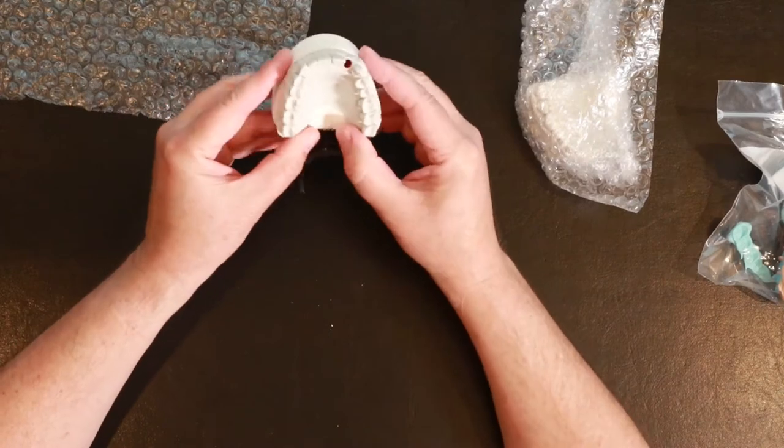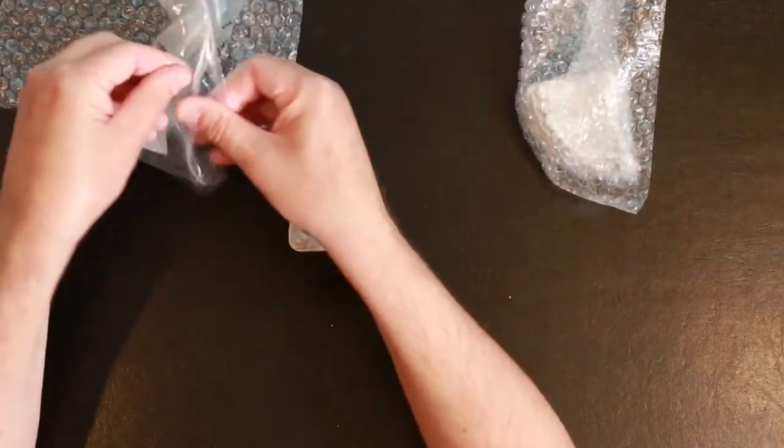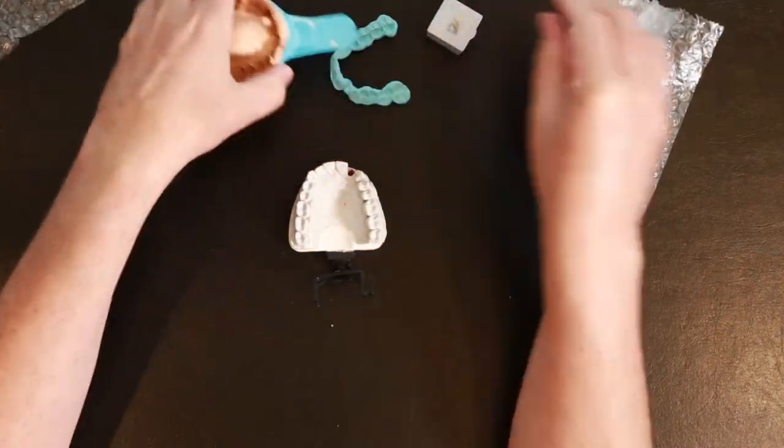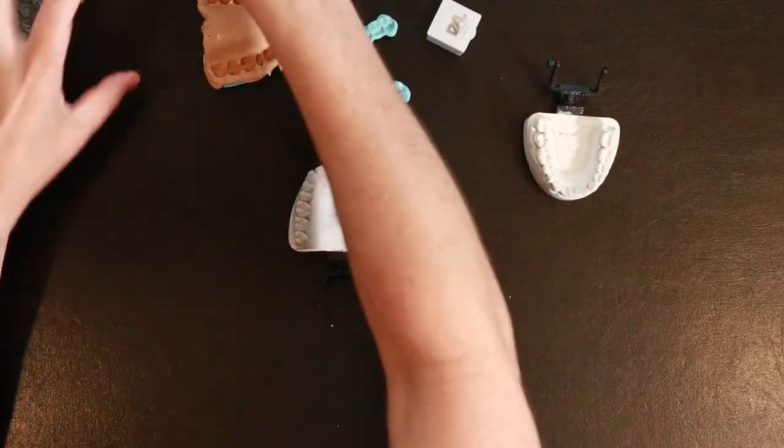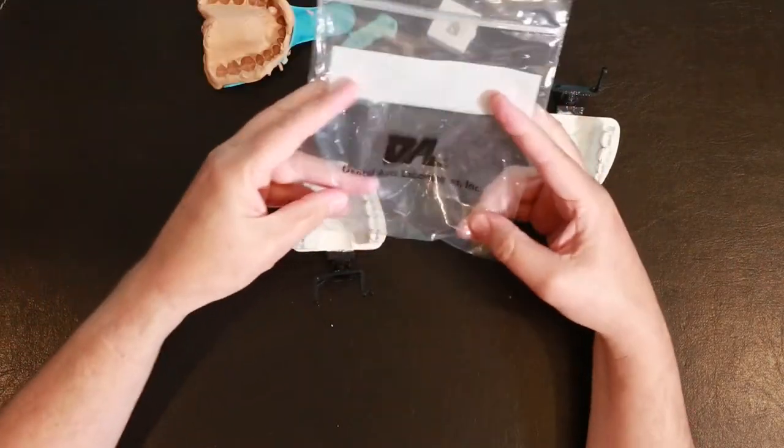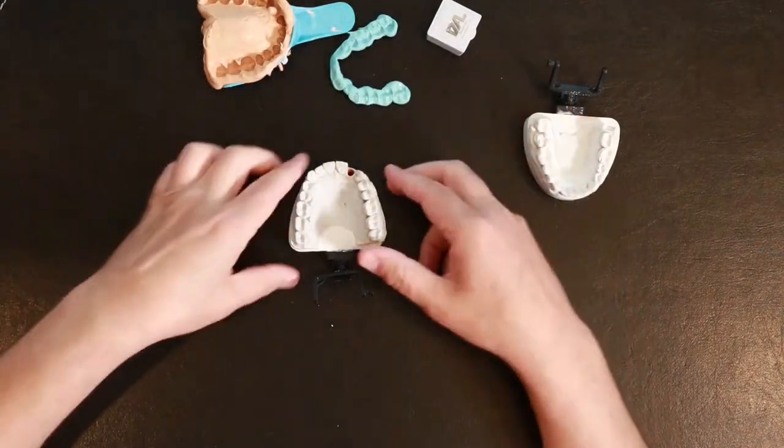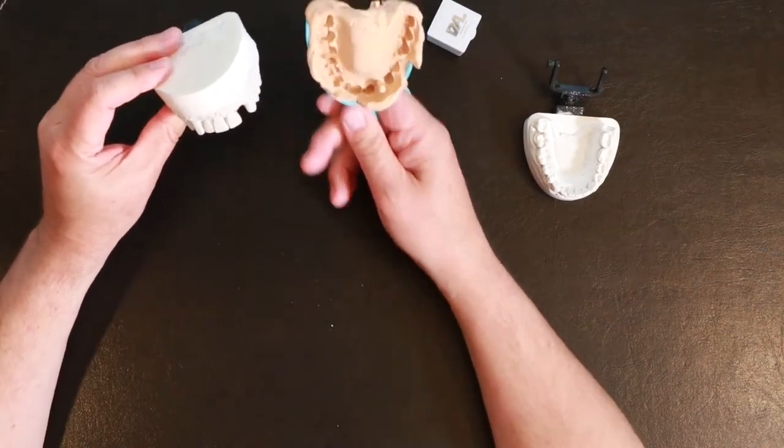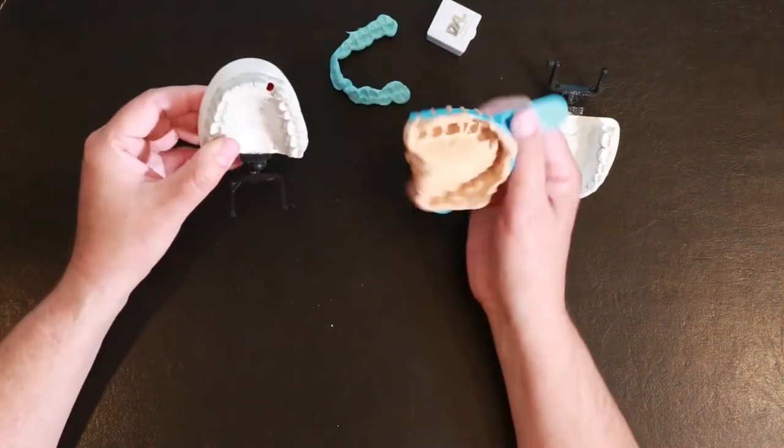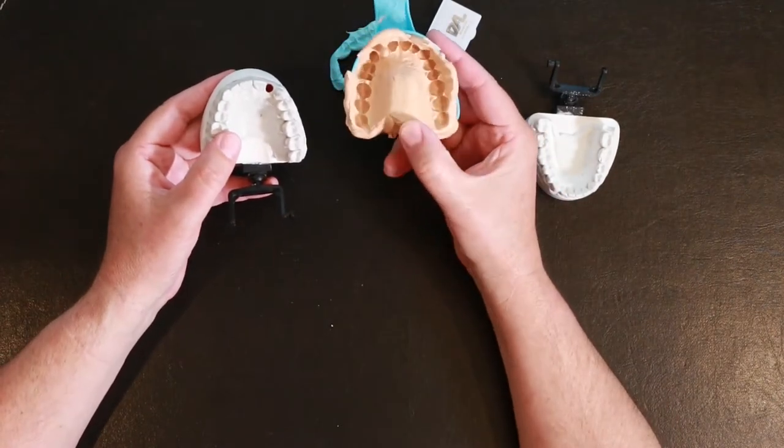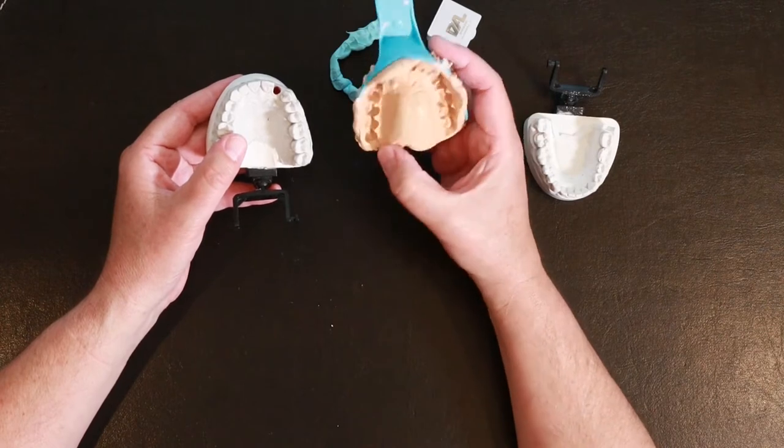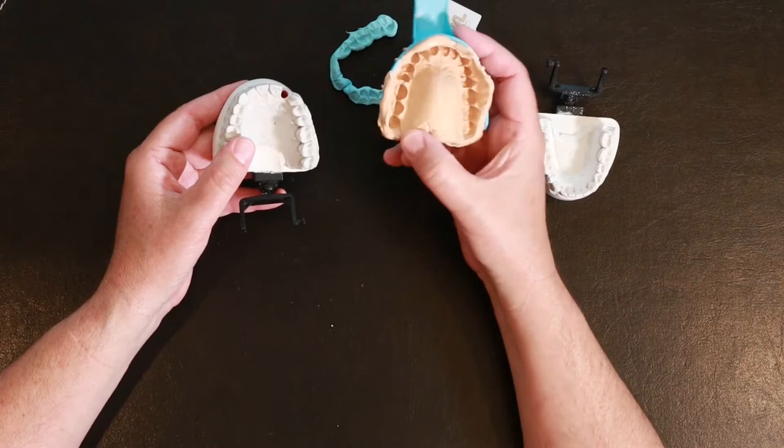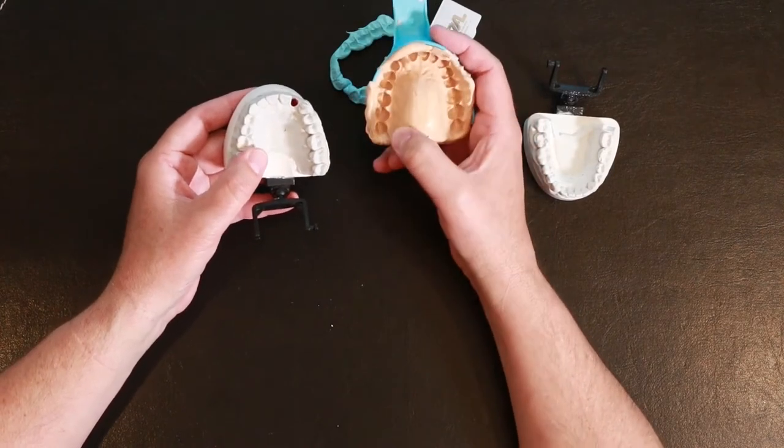This is the upper model, this is the model that they made based off of this impression that I sent. I took this earlier. You can rewind and see how I made that or if you're watching my unboxing video check out my steps in making a Maryland bridge video.